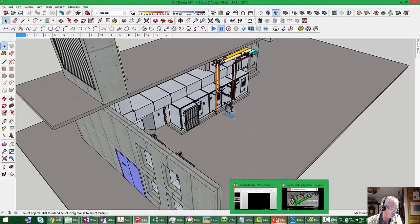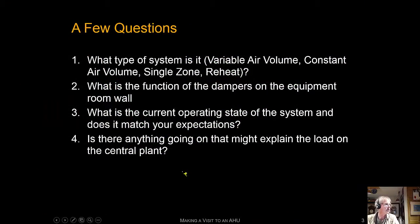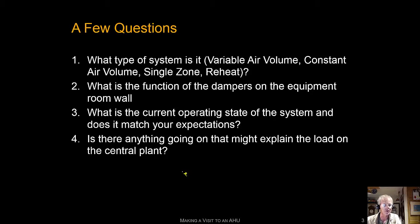Before we turn you loose, let's take a look at the questions. You should be able to figure these out just by observing what's going on in that mechanical room. The first question is: what type of system is it? Is it variable volume? Constant volume? Reheat? A single zone system? In other words, what process is this air handling unit using to meet the loads in the ballroom? Also, you'll notice there are some dampers on the wall of the equipment room — what's their function? And what is the current operating state of the system, and does it match what you would expect given what you know is going on?